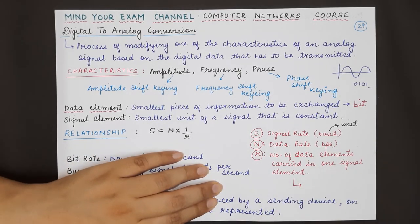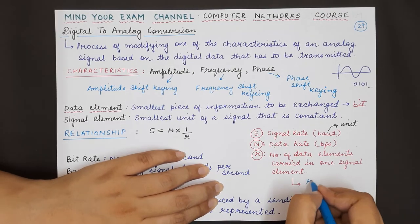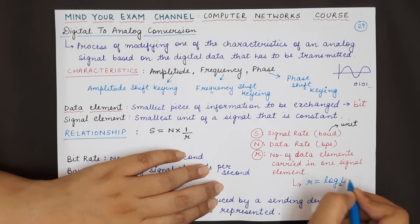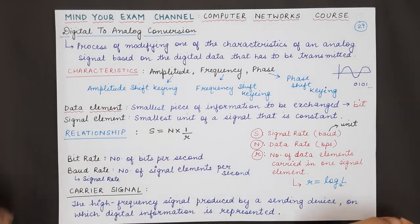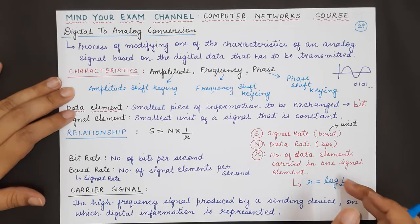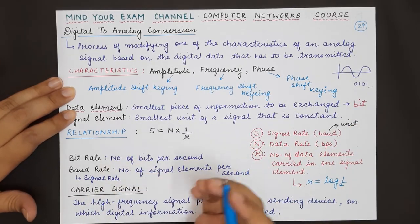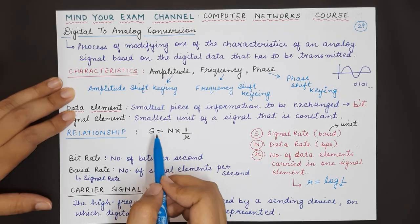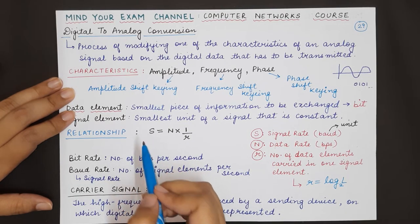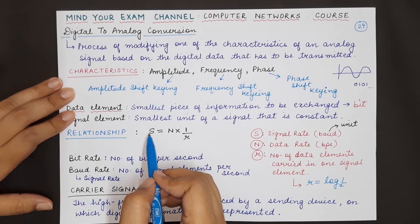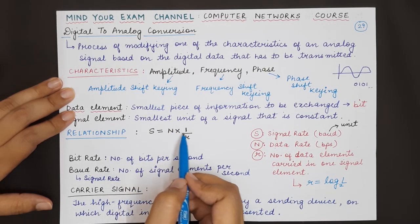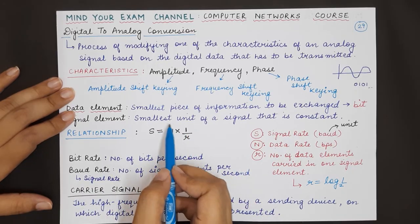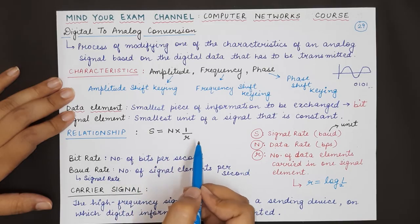The formula for calculating R is: R = log₂(L), where L represents the number of types of signal elements being transmitted. The value of L will be given in numerical questions, and you use it to calculate R and then determine how many signals are transmitted per second, or to calculate data rate when S and R are given.